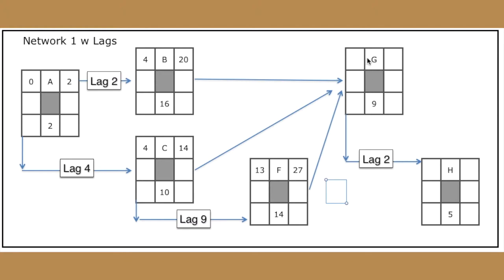Now, notice that for G, for its early start, we could have 20, 14, or 27. Well, we take the longer one because we have to wait for all three of these to get done, right? But F is going to take the longest at the time period of 27, so that's our earliest start time. We're going to add nine to that, which should be somewhere around 36.